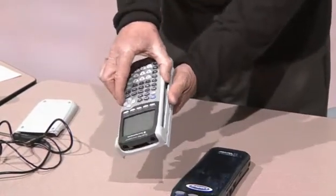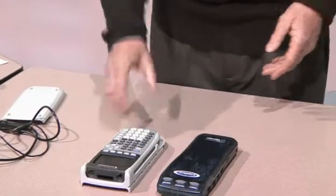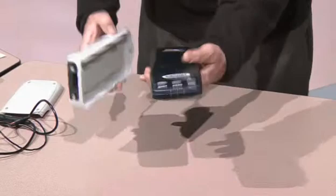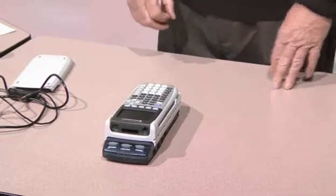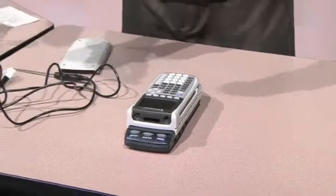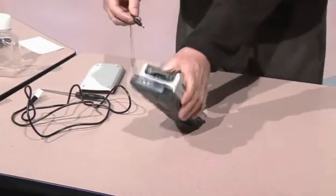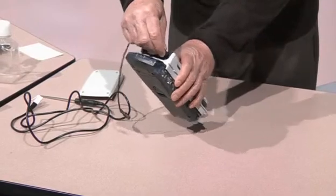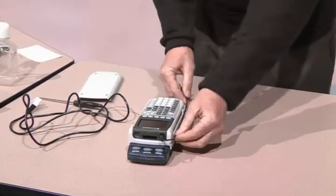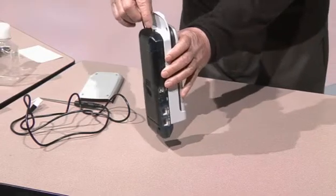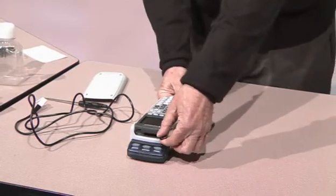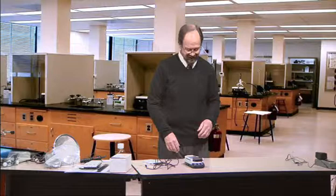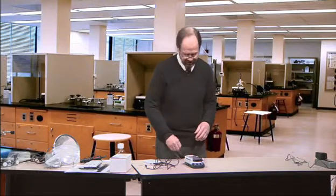So the first thing you do is you snap the 84 Plus into the sled. Then you take the Lab Pro or CBL2, and there's a rail, and you just slide that on. And now it's hooked together as one device. Then you will take an I.O. cable, and it will hook the I.O. port of the 84 Plus to the I.O. port of the Lab Pro. You always got to make sure those are nice and firmly attached. Or you'll get an error message that says the graphing calculator does not see the Lab Pro.